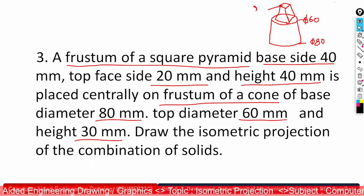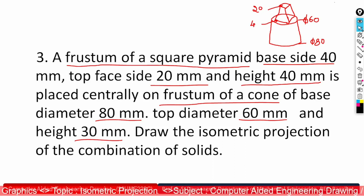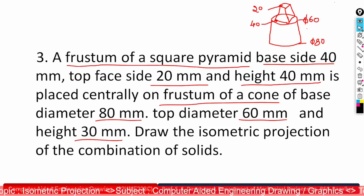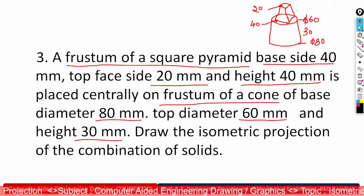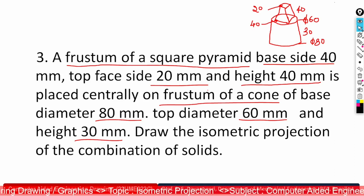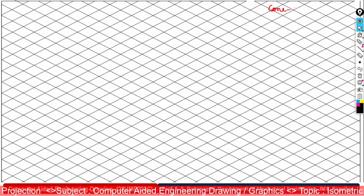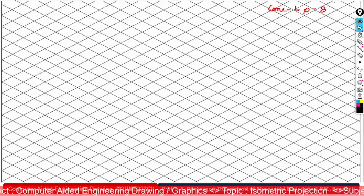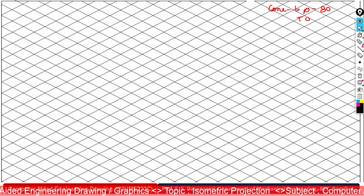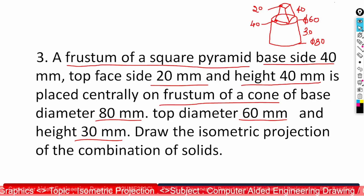The top surface is 20 mm and the base is 40 mm. The height of the frustum of the cone is 30 mm, and the overall height of the whole shape is 130 mm, with the square pyramid height being 40 mm. Now let us construct the grid sheet. The frustum of a cone has base diameter 80 mm, top diameter 60 mm, and overall height 30 mm.